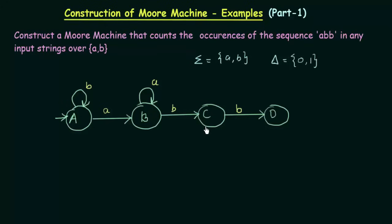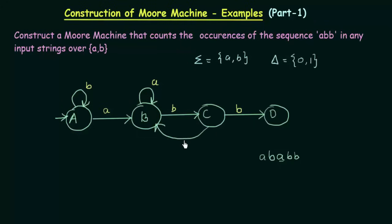Coming to state C: on getting input 'b', it goes to D. But what happens if it gets input 'a'? Suppose I came to state C via A, B. If in state C I get an 'a', then I have to wait for another B and B to get the sequence ABB. So if C gets input 'a', I will send it to state B — because from state B, I can then get B, B and reach D, completing the sequence ABB. So state C is now complete.